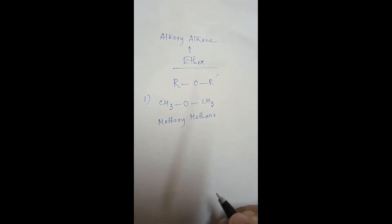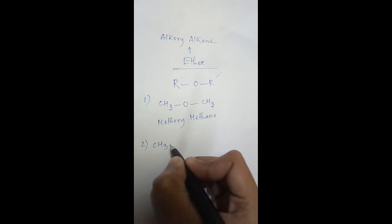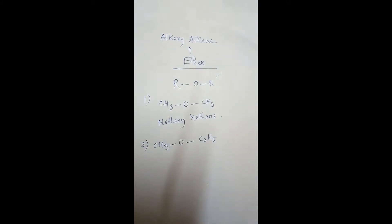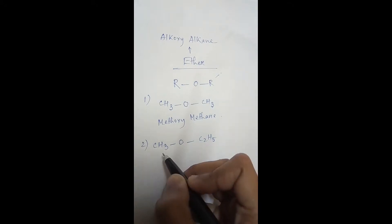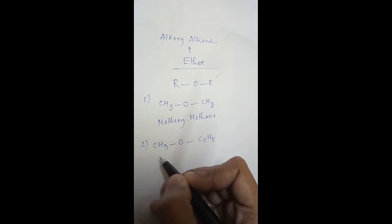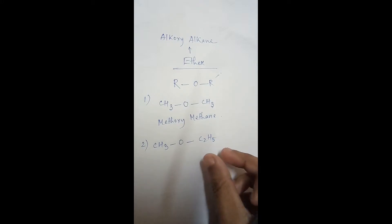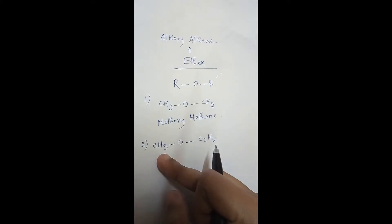Now take another example: CH₃OC₂H₅. Here you can see R and R prime are different — one is the methyl group and the other is the ethyl group. In the methyl group only one carbon atom is present, and in the ethyl group two carbon atoms are present, so the ethyl group has a longer chain compared to the methyl group.